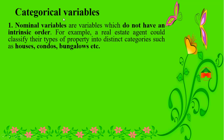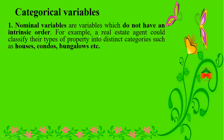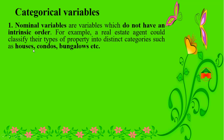Nominal variables are categorical variables that don't have any intrinsic order. For example, a real estate agent could classify their types of property into distinct categories such as houses, condos, and bungalows.